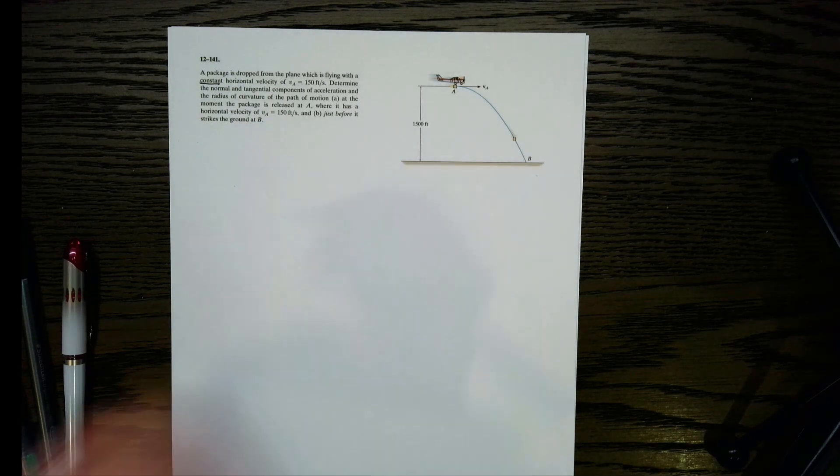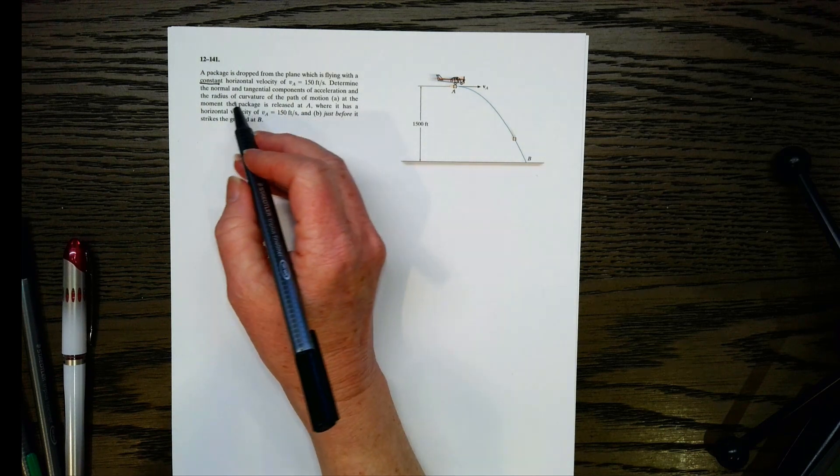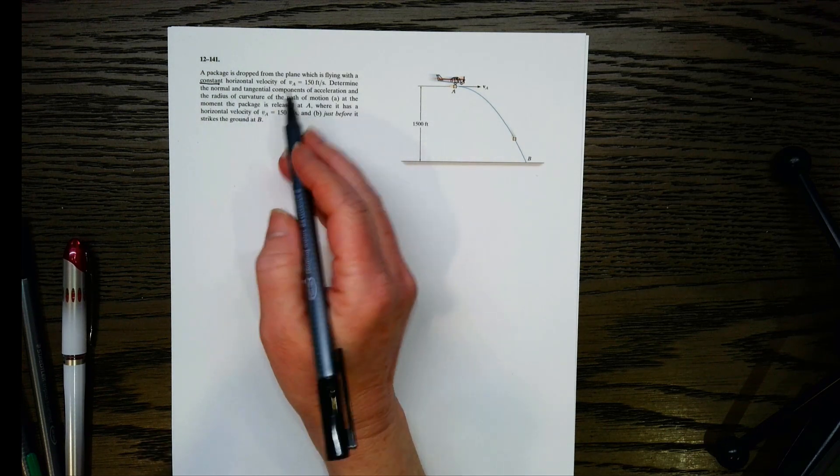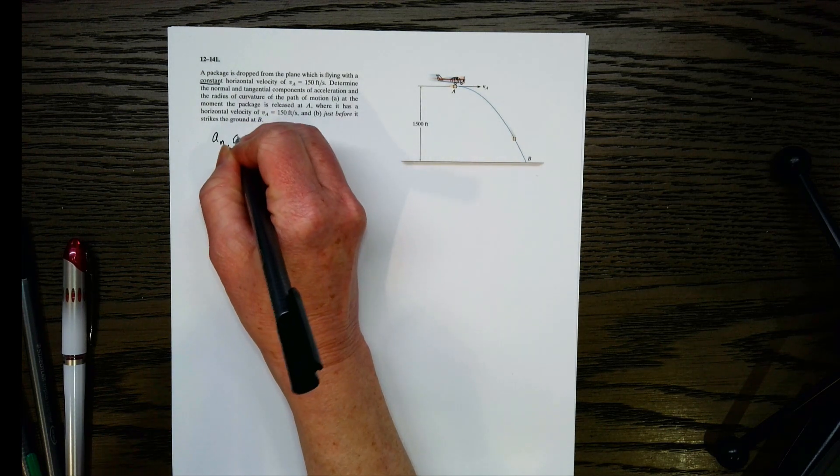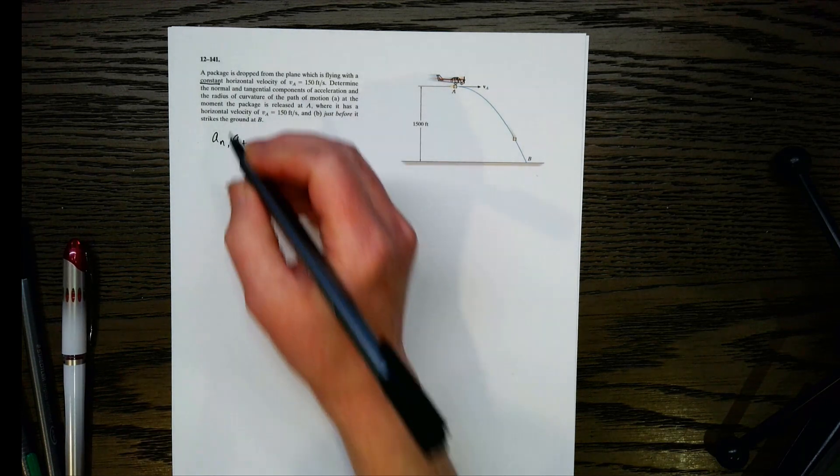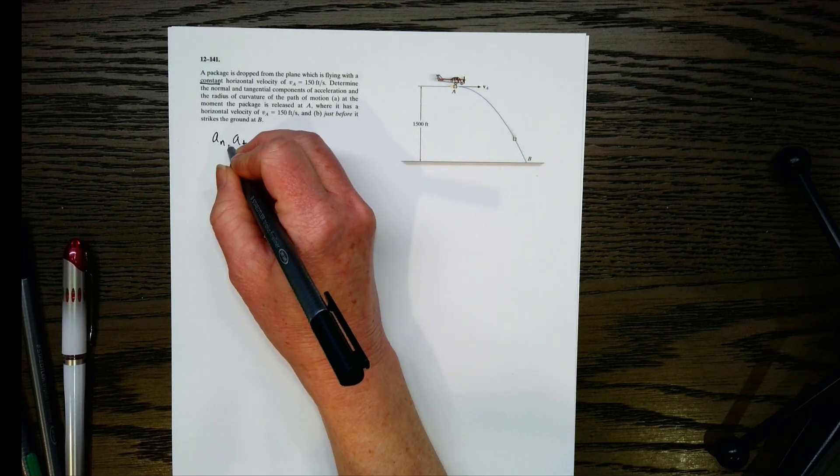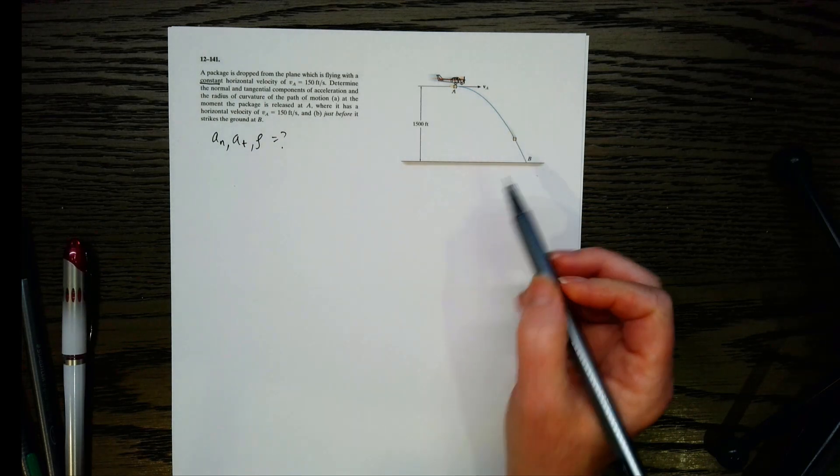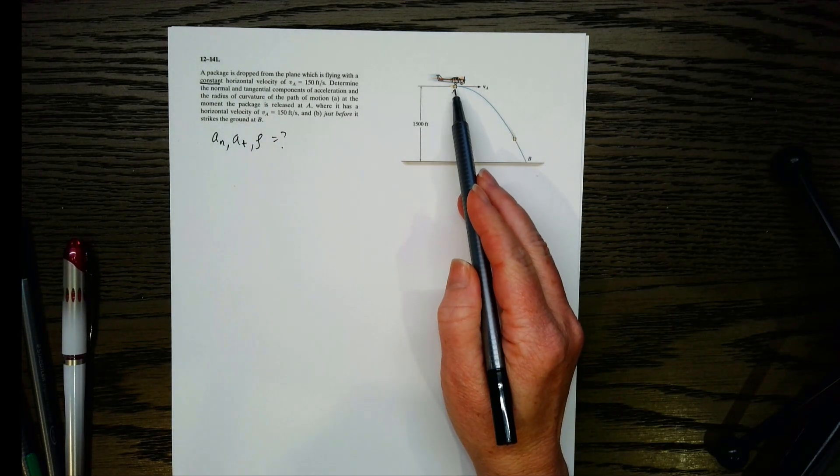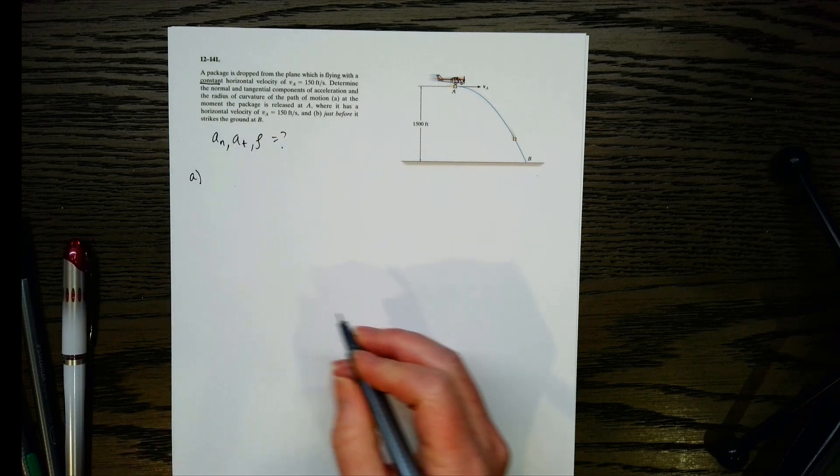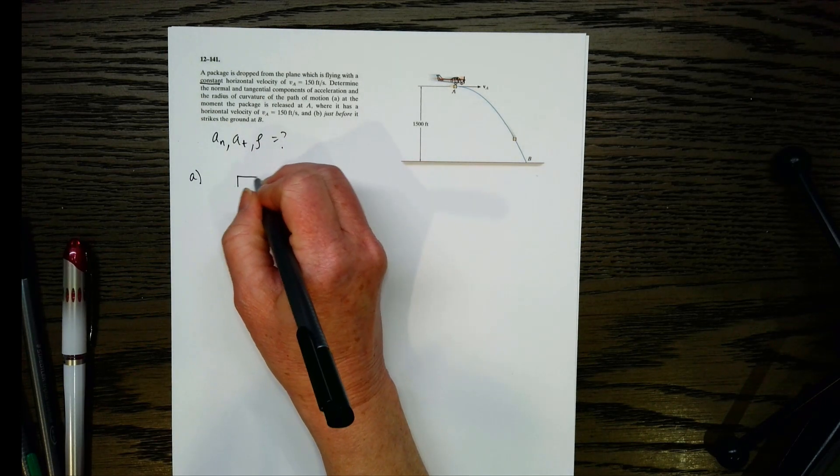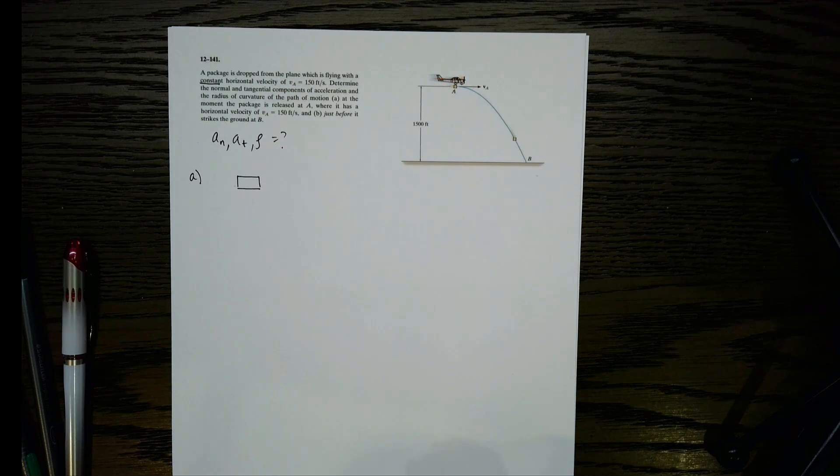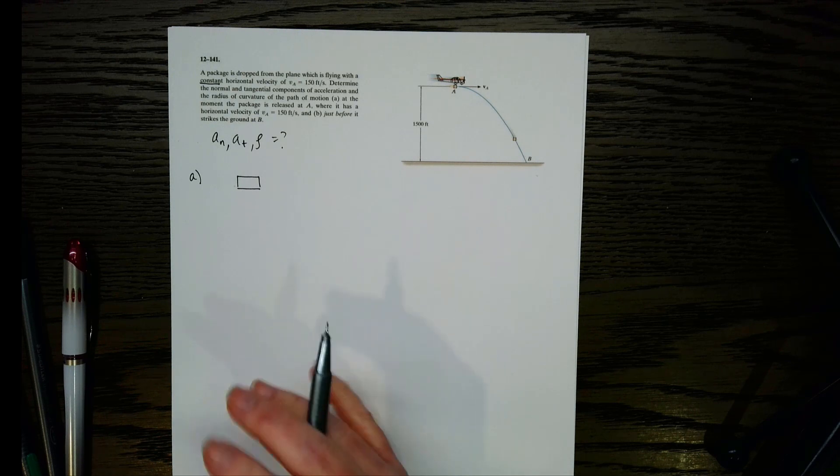First of all, let's remember what we're looking for. We want normal tangential components, so AN, AT, and then we want rho. Rho is the radius of curvature. So we want those three things at those two locations. Let's do part A where we're looking at point A, and let's draw a picture here. So let's say that's the box and the plane.